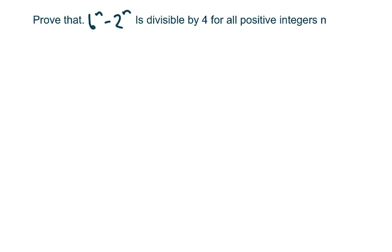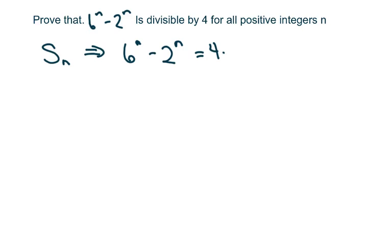Hi everyone. We're going to prove that 6 to the nth power minus 2 to the nth power is divisible by 4 for all positive integers n. We're going to restate the conjecture using the definition of divisibility, and basically that means we state it as 6^n minus 2^n equals 4r for some integer r.